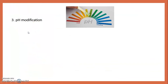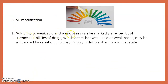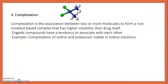In the pH modification method, solubility of weak acids and weak bases can be markedly affected by pH. Hence, solubility of drugs which are either weak acids or weak bases may be influenced by variation in pH. An example is strong solution of ammonium acetate. In complexation, an association between two or more molecules forms a non-covalent complex that has higher solubility than the drug itself. An example is complexation of iodine and potassium iodide in iodine solution.